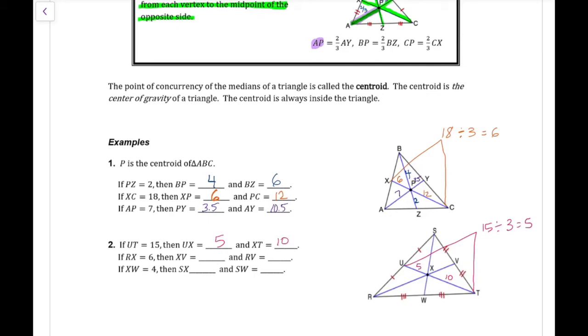Looking at if RX equals 6, then that's the long side. I cut that in half for the short side. So XV would be 3 and RV would be the entire thing. RV would be 9.